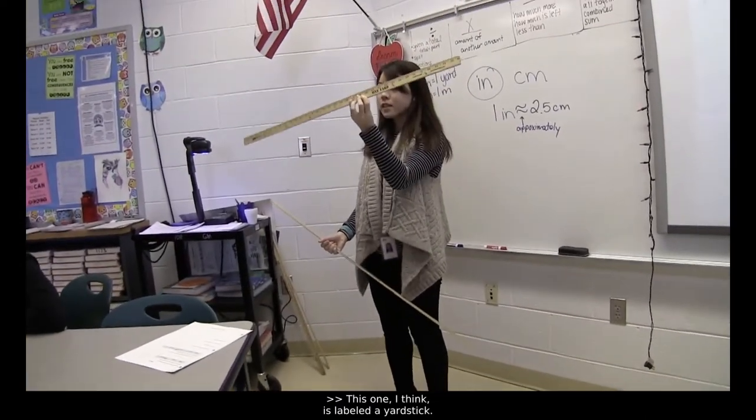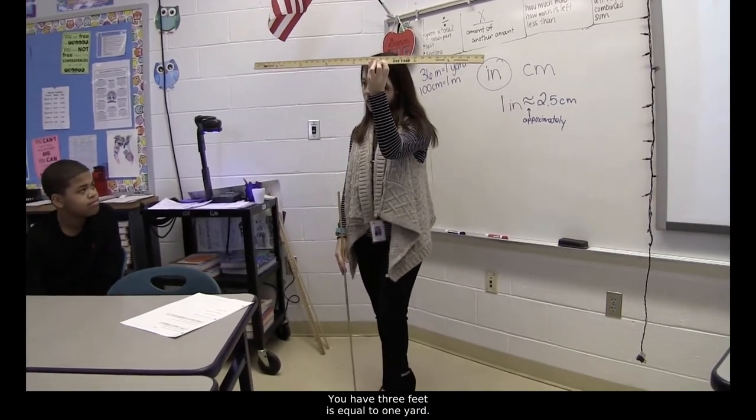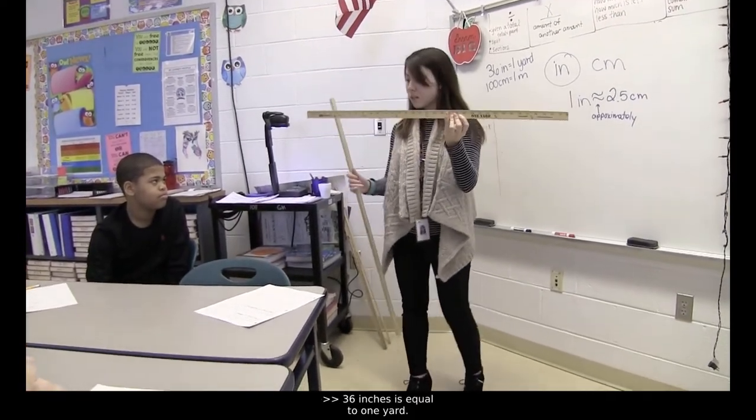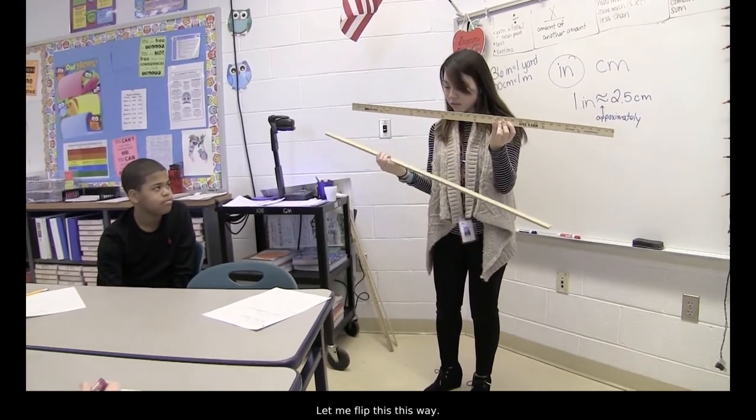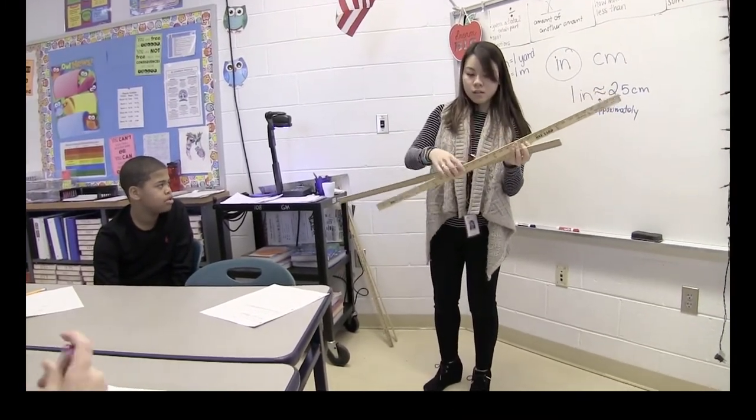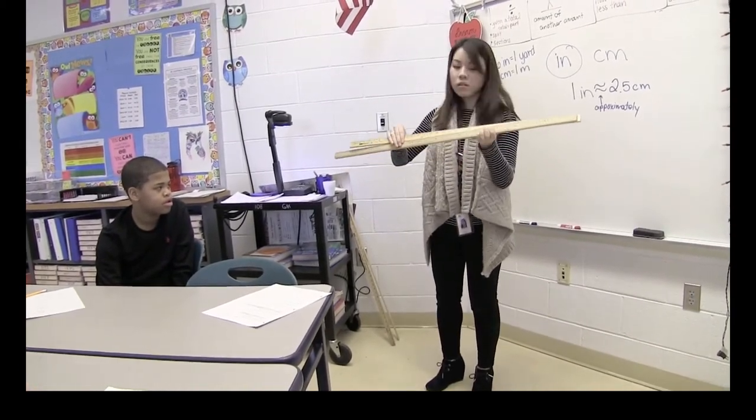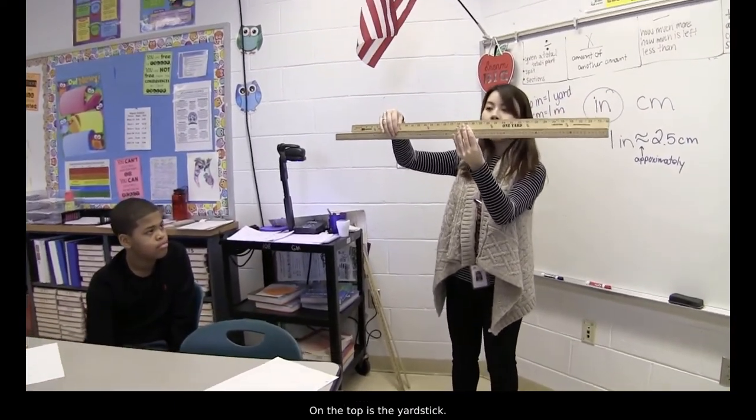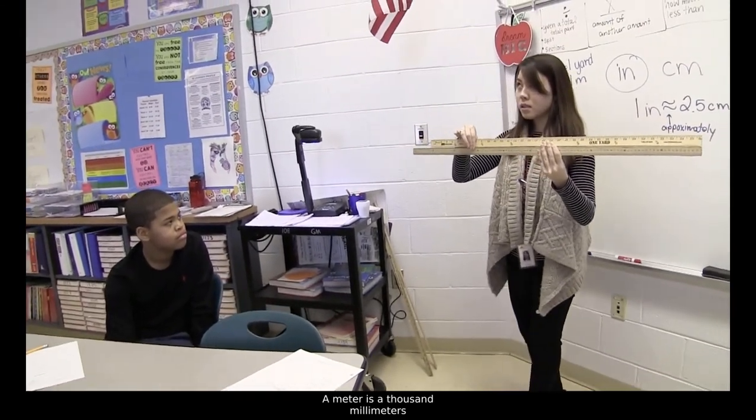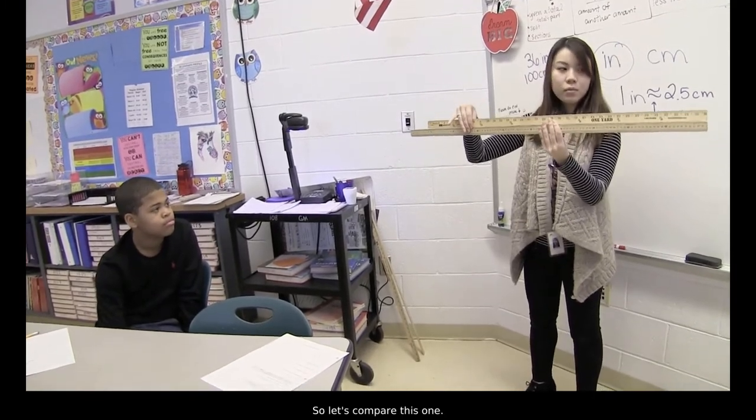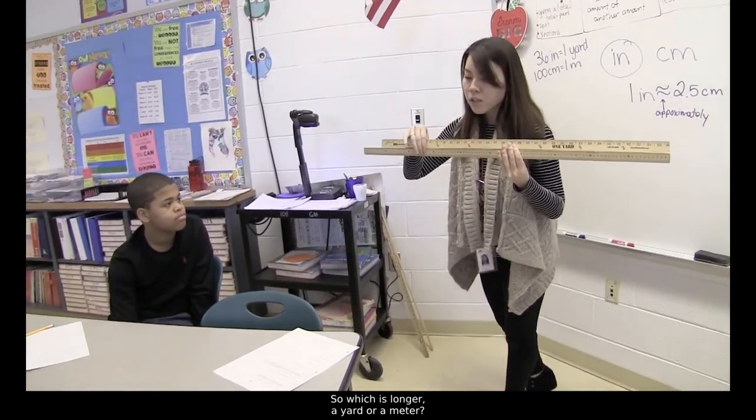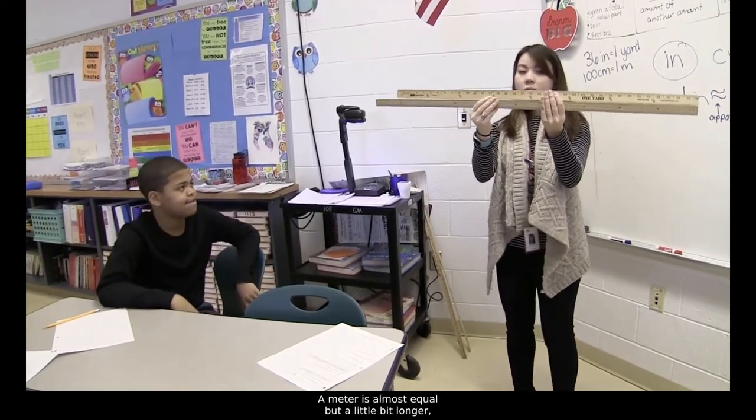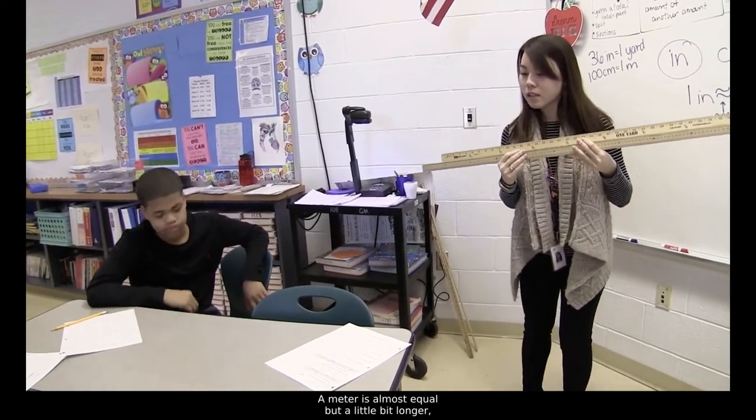If you look, you have yards on one side, and you have meters on the other side of your stick. This one actually is labeled a yard stick. If you have three feet is equal to one yard, how many inches is in one yard? 36 inches. 36 inches is equal to one yard. Over here, I have a meter stick. We have a meter, which is the bottom one. On the top is the yard stick. A meter is a thousand millimeters, or a hundred centimeters. So, let's compare this one. So, which is longer? A yard or a meter? A meter. A meter is almost equal, but a little bit longer.